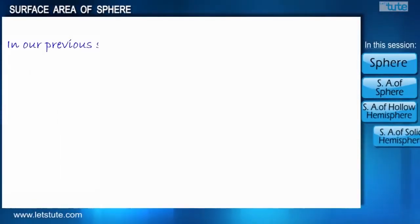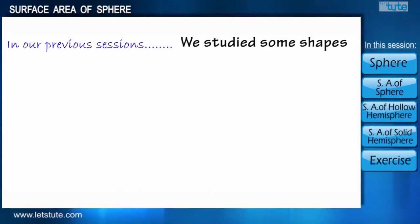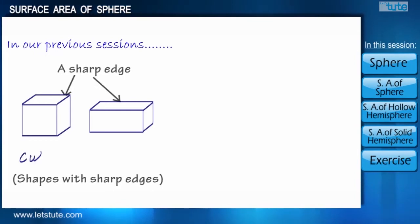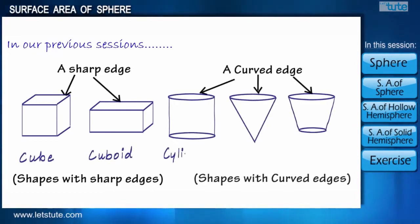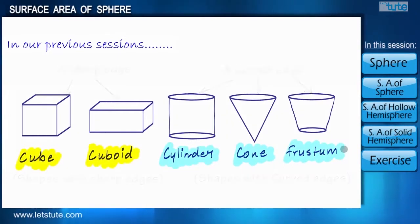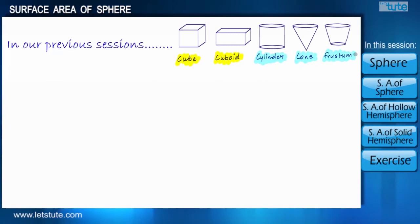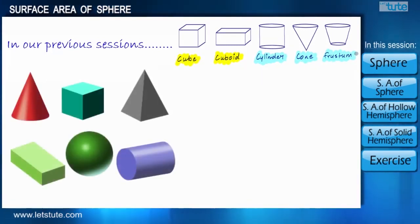Hello everyone. In our previous sessions we have studied many different shapes where we first started with shapes having edges, followed by some curved objects with curved edges. Now before we start this session, here is a question for you which will introduce a new shape. Suppose we have an object which when placed on the ground only a single point touches the ground.